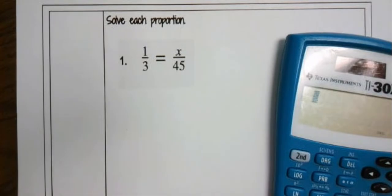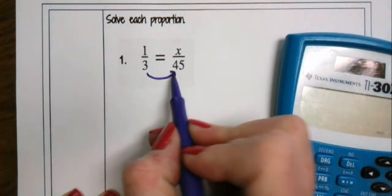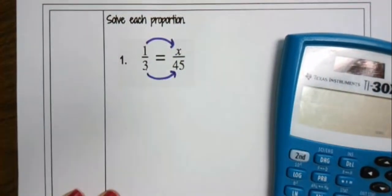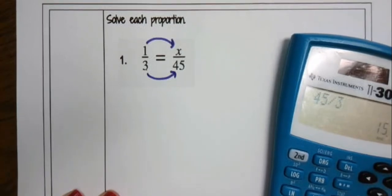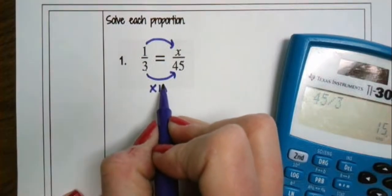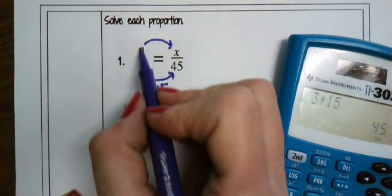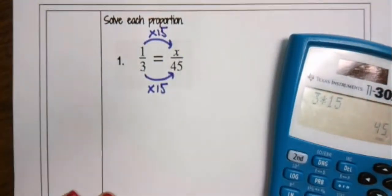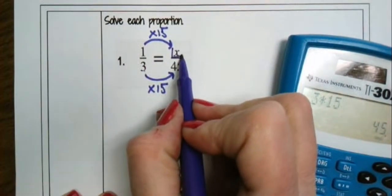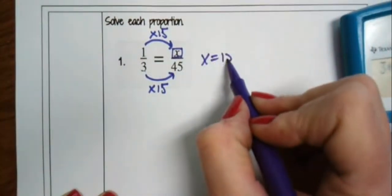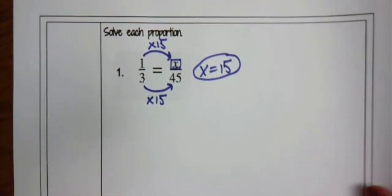I could use either of those or I could cross multiply. Let's use factor of change. How many times bigger from 3 to 45? If I take 45 divided by 3, it's 15. So 3 times 15 is 45 — always good to double check your math. That means I can do the same thing to the top to produce an equal fraction. So 1 times 15 would be 15, and the missing x value: x equals 15. So one-third equals 15/45ths, using the horizontal factor of change method.